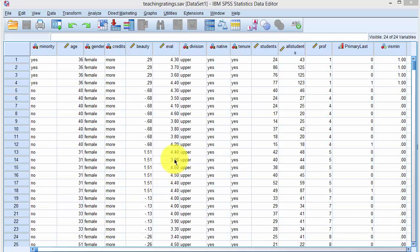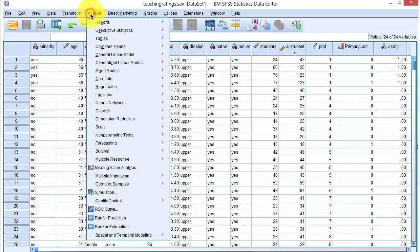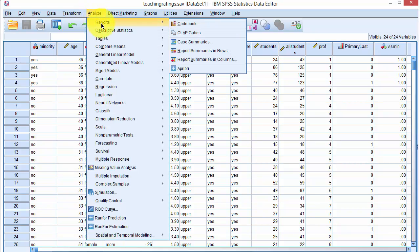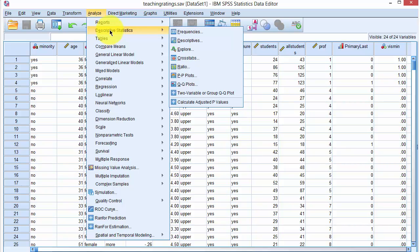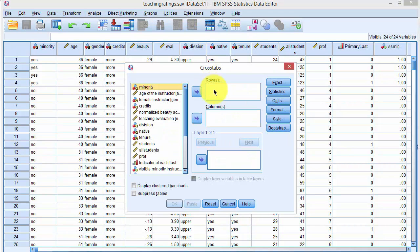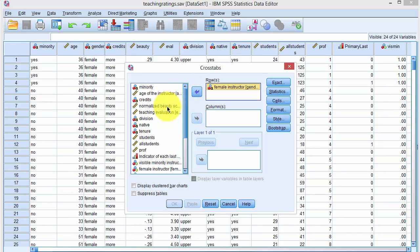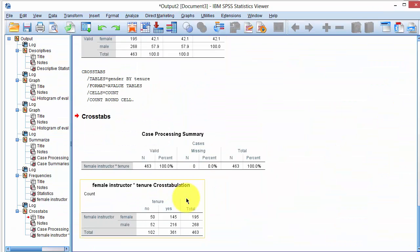In SPSS, we can compute a cross-tab by clicking on Analyze, and then scrolling through this and getting to cross-tabs under Descriptive Statistics. We pick rows as gender, so pick rows as gender, and tenure status as columns, and click on OK. And the cross-tabs are produced.